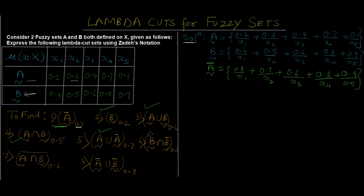Question 6 is a similar type where we have to calculate the intersection between fuzzy set B and its complement. I'm leaving this for you to practice — calculate the answer and put it in the comment section.